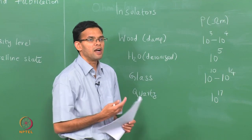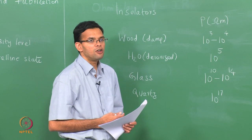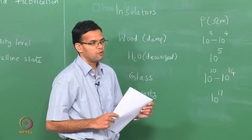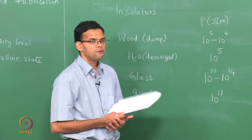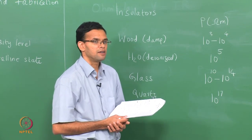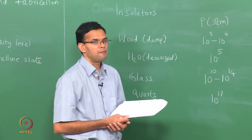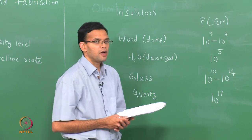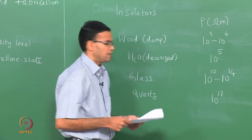The question is how to understand this difference in resistivity values. To do that, we need to look at the band gap of the material and how the band gap evolves. Our focus will be mainly on metals and semiconductors, but whatever concepts we develop can equally be applied to insulators. Let us go ahead and look at how the band gap evolves starting with a metal.